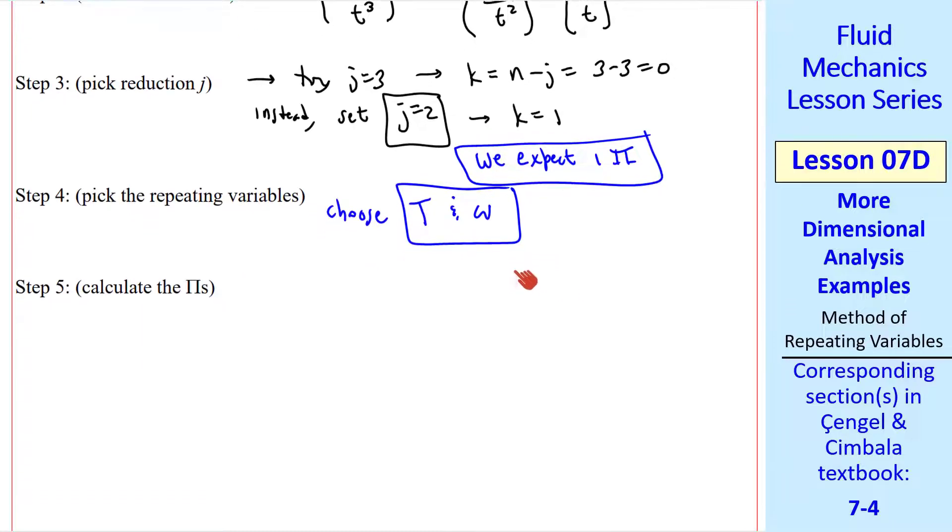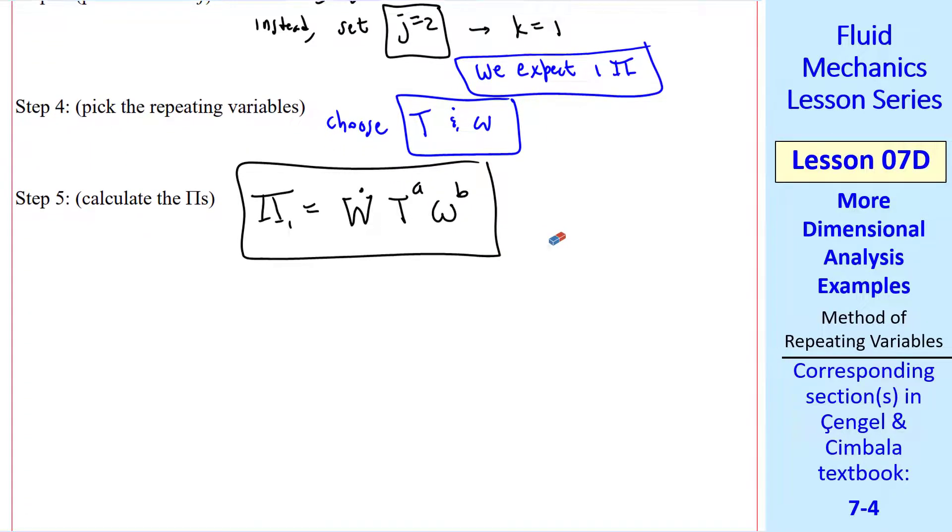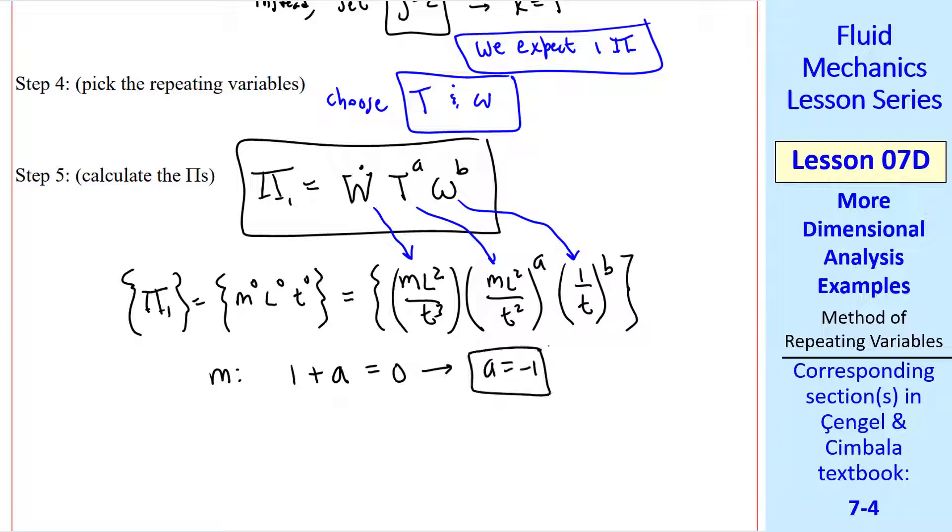Now we calculate the pi's. We set pi 1 equal w dot t to the a, omega to the b. Again, we force it to be dimensionless, like we've done a few times already. These are the primary dimensions of w dot. Those of t, raised to exponent a, and those of omega, raised to exponent b. For mass m, we have exponents 1 and a. So 1 plus a has to equal 0, or a equal negative 1.